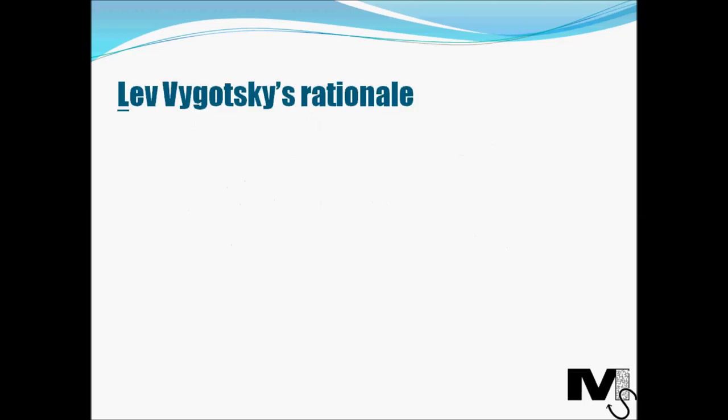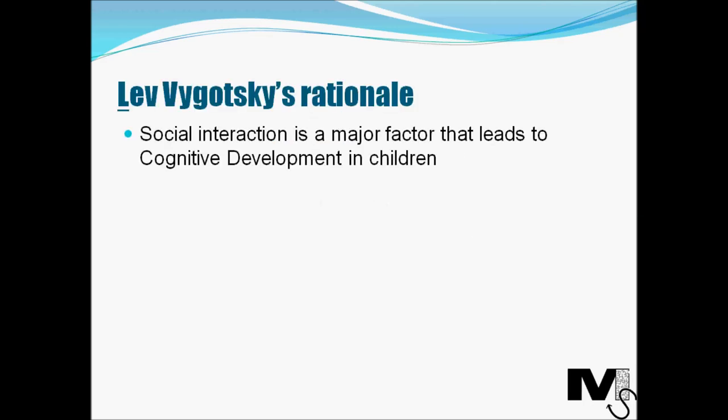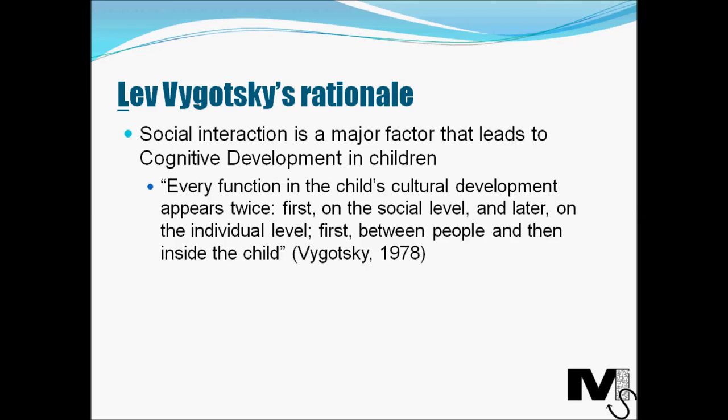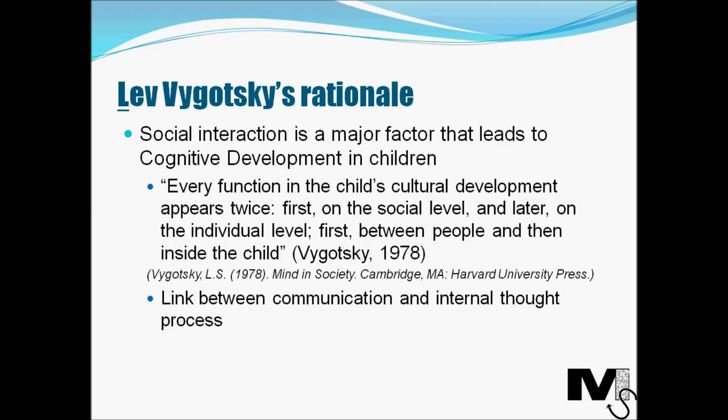What was Vygotsky's rationale in developing this theory? He believed that social interaction is a major factor that leads to cognitive development in children. To quote: "Every function in the child's cultural development appears twice — first on the social level and later on the individual level, first between people and then inside the child." This basically means there is a link between communication and internal thought process.